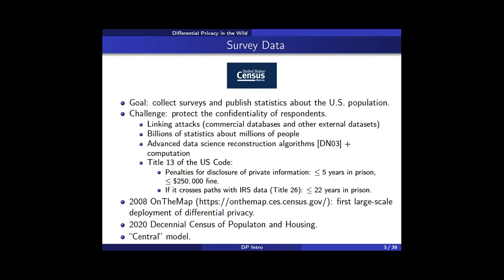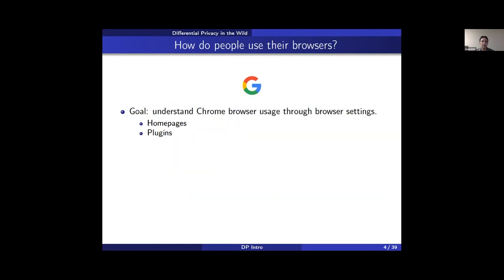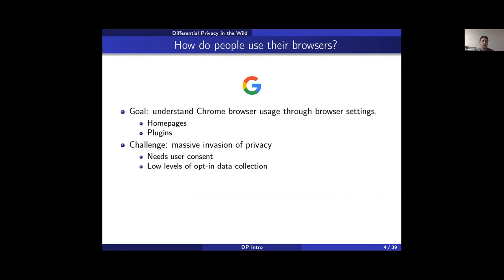The use of differential privacy at the Census Bureau follows the central model of privacy, where the data collector is trusted by the respondents. The alternative is the local model, in which the data collector is not trusted. For example, Google is very interested in your online behavior and usage of their technology — one of their earlier goals was to understand common user settings for the Chrome browser, including homepages and plugins, but just sending all this information to Google would be a massive breach of privacy.